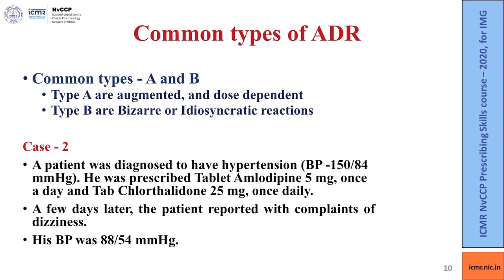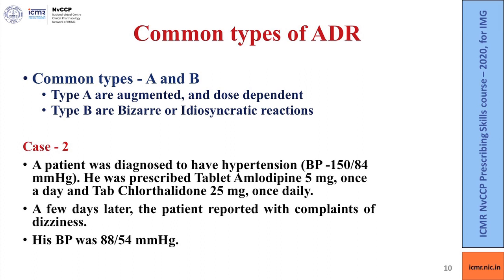A patient diagnosed with blood pressure of 150/84 mmHg was prescribed tablet amlodipine — a calcium channel blocker — 5 milligrams once a day, and tablet chlorthalidone — a diuretic — 25 milligrams once a day. A few days later, the patient reported with complaints of dizziness and a recorded blood pressure of 88/54 mmHg. The hypotension that occurred in the patient is an exaggeration of therapeutic response — this is an example of a dose-related adverse effect. Insulin-induced hypoglycemia is yet another example of a type A or augmented ADR. Augmented adverse reactions are predictable and hence are easier to manage.